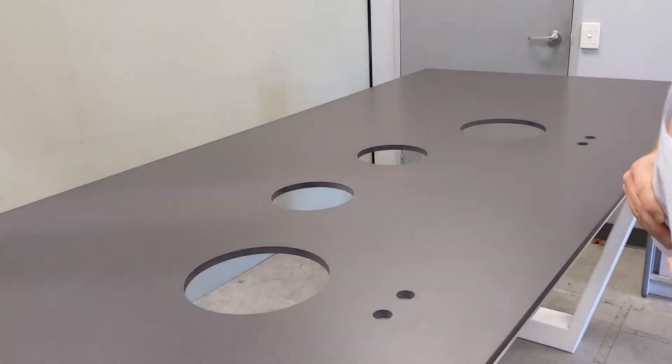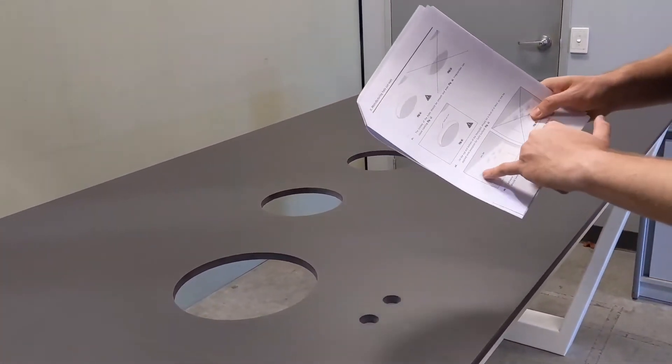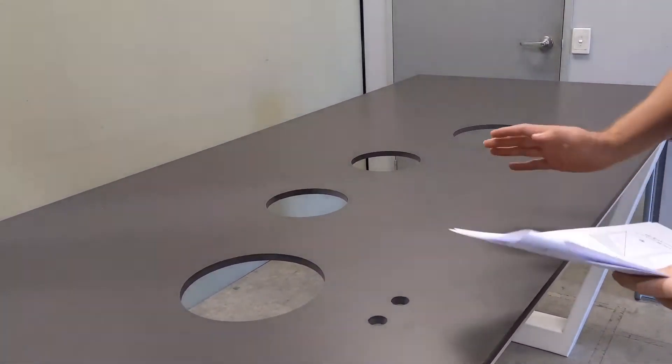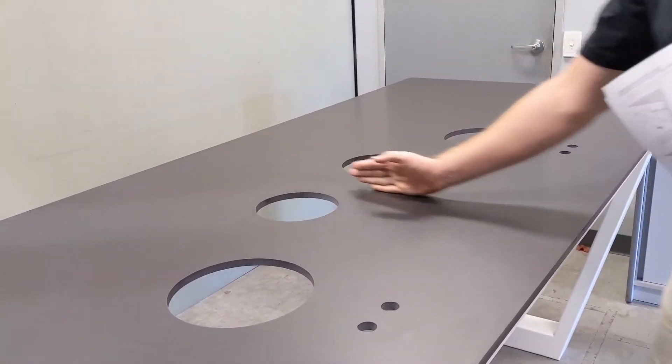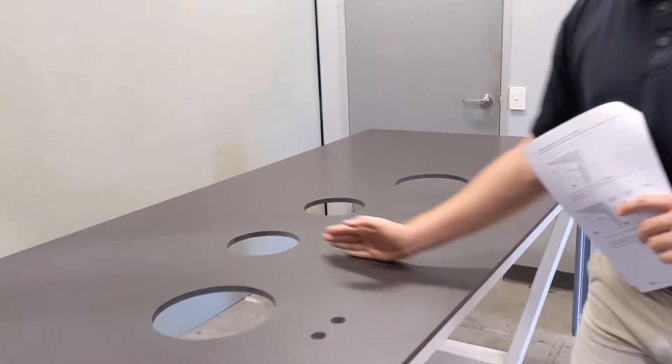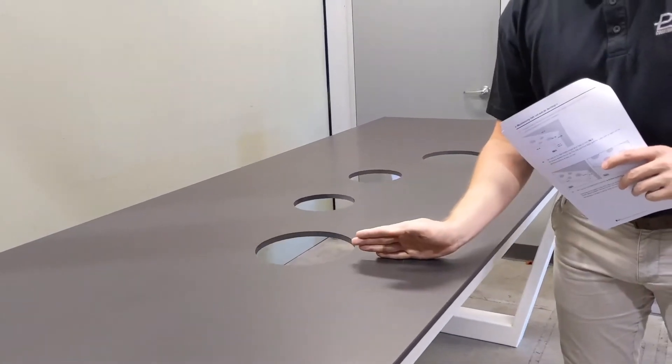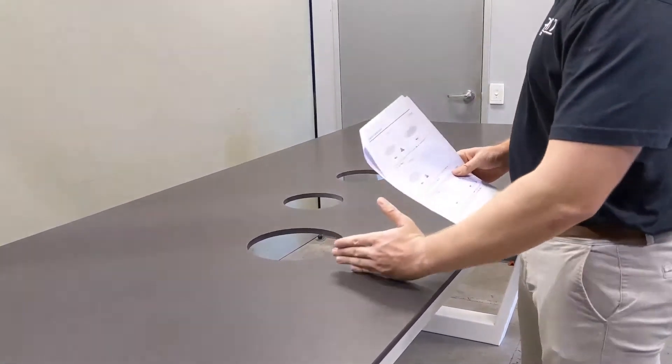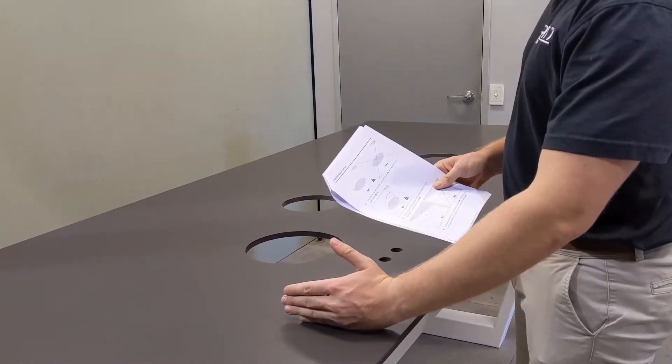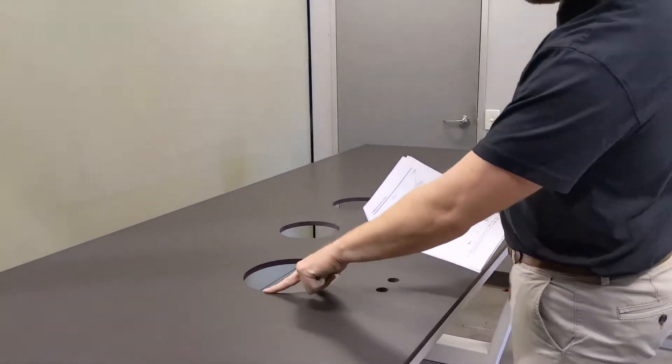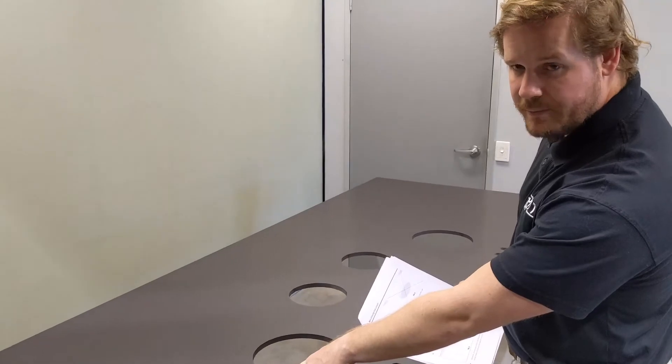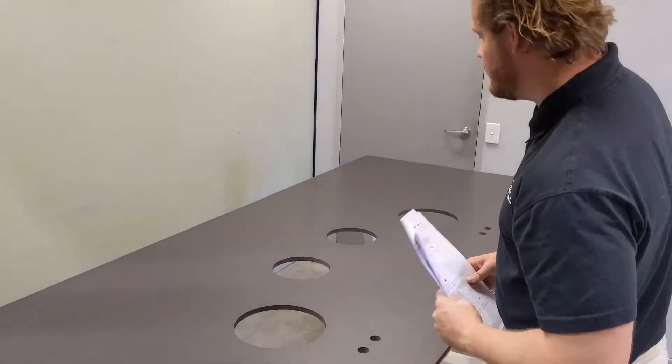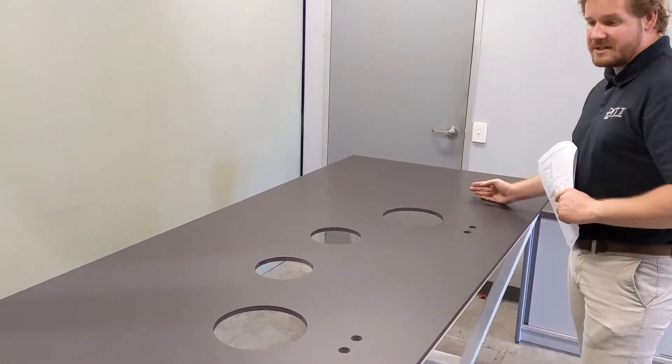The other consideration we always want to make sure we look for is where the join is on the countertop. We don't want to see a join running through the middle of a cooktop or burner or anywhere within the cooktop's length. We want to make sure that those joins are at least 250 millimeters away from the edge of the nearest cutout. So 250 millimeters in that direction, 250 millimeters in that direction.